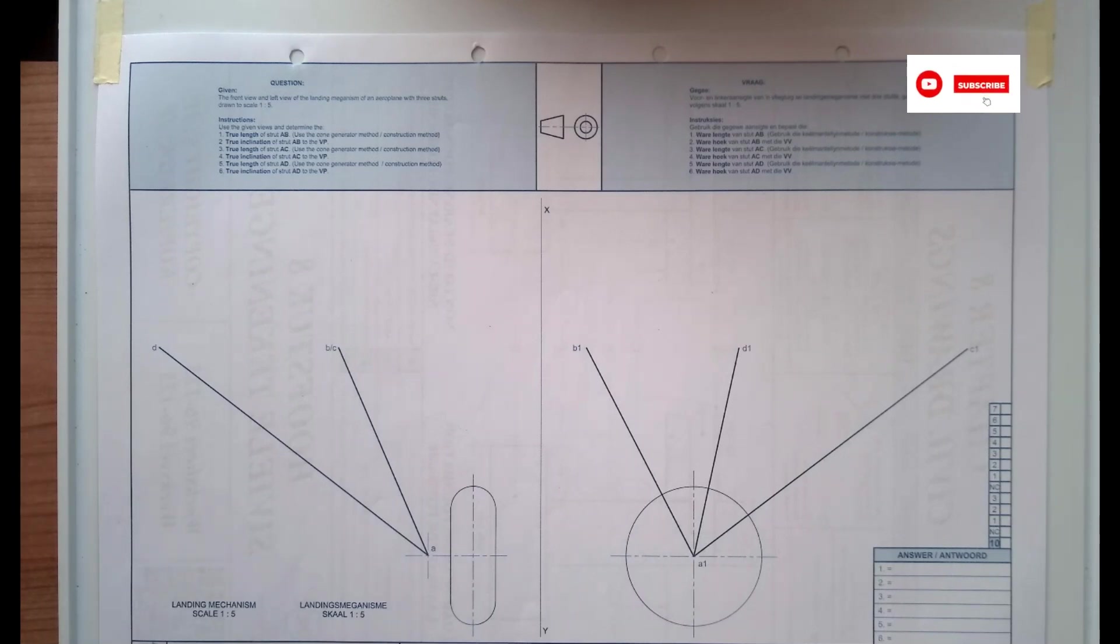For descriptive geometry there's two methods of finding the true length which is the projection and the cone generator method. In this page they are very specific on which method you must use and they've stated that they want the cone generator method.